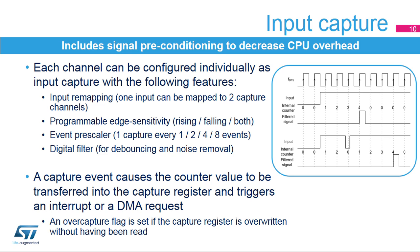An event prescaler allows capture of one event every two, four, or eight events. This decreases the CPU burden when processing high-frequency signals and allows the measurement to be more accurate, since it is performed over multiple input signal periods. Spurious transition events due to noise or bounces can be removed using a programmable digital filter.